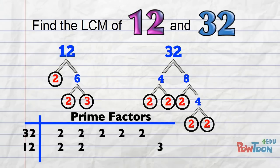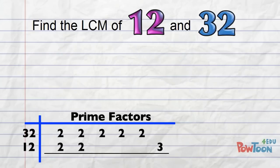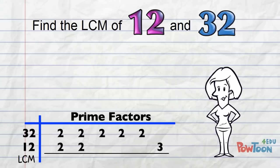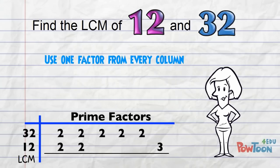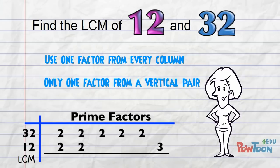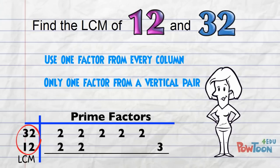I put a line under the prime factors to help my thinking. Finally, we find the prime factors of the LCM. We use one factor from every column, and if there's a vertical pair, we only take one of those factors.